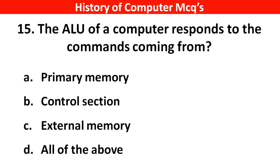Next question. The ALU of a computer responds to the commands coming from — Options A: Primary memory, B: Control section, C: External memory, D: All of the above. Right answer is option B, Control section.